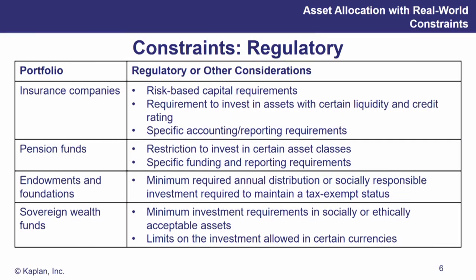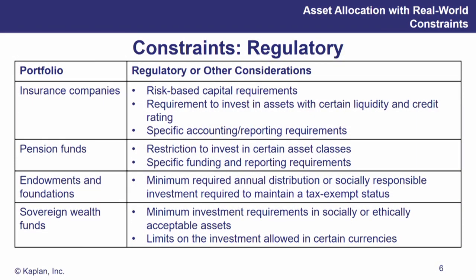There's a requirement for insurance companies to invest in assets with certain liquidity and credit ratings, plus specific accounting and reporting requirements. Pension funds must meet their pension obligations, and if the fund is currently at a deficit, you may have to come up with a glide path to get to being fully funded. There may be restrictions on investing in certain asset classes — a pension fund is obviously going to have a very high fixed income component because of that low risk and need for regular cash flows, as well as specific funding and reporting requirements.